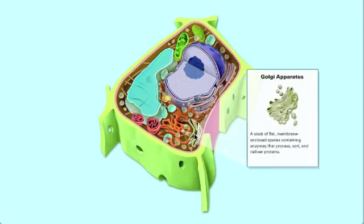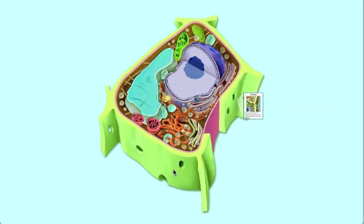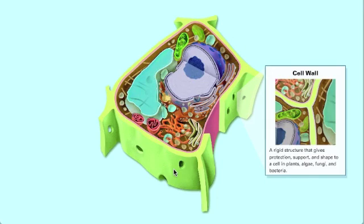The new thing is that a cell wall. Animal cell does not contain cell wall. Plant cell does. Cell wall, it's a rigid structure that gives protection, support, and shape to the cell. Plants, algae, fungi, and bacteria.